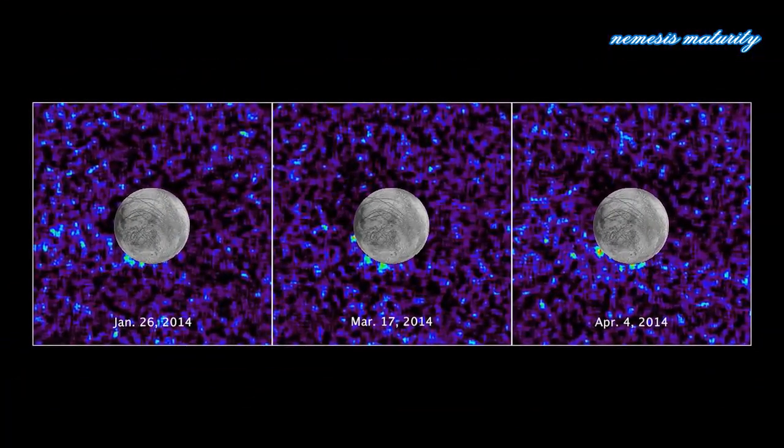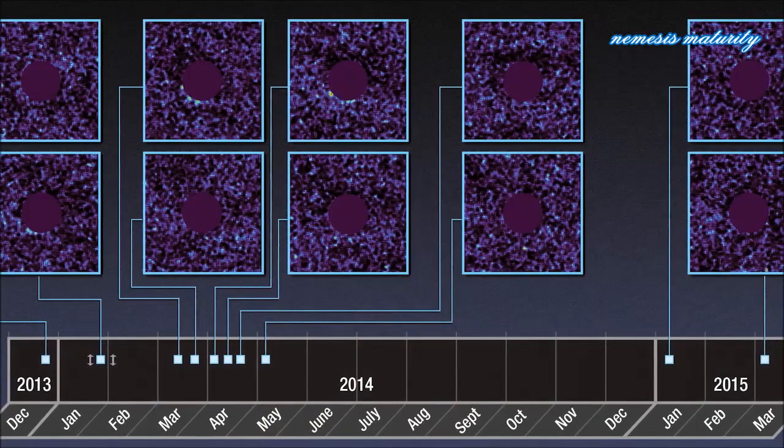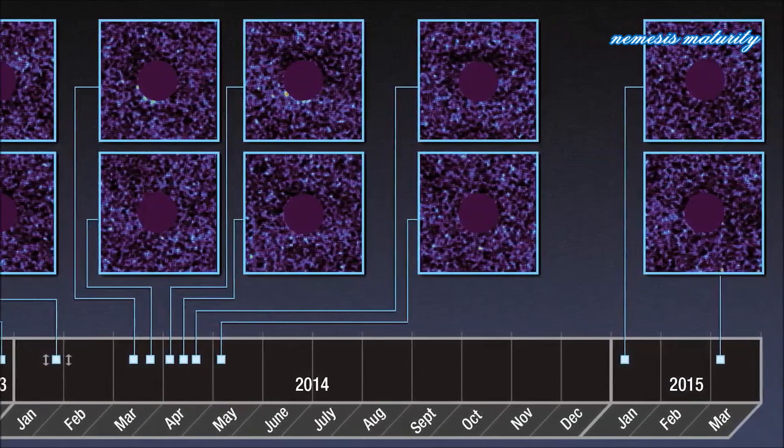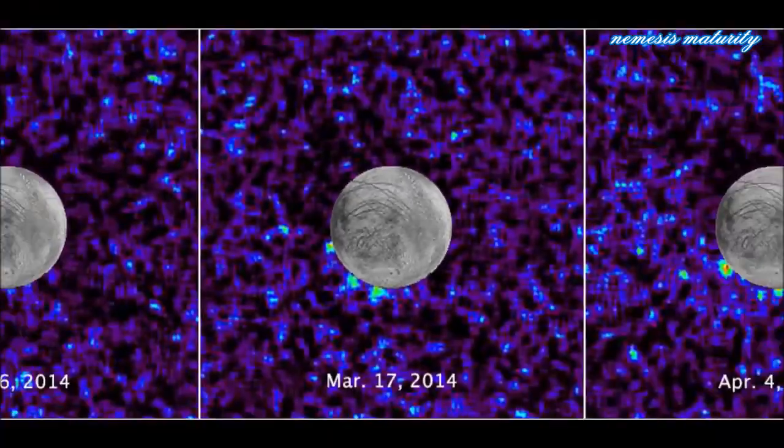Also, these plumes are transient, meaning they come and they go. Out of ten observations of Europa transiting across Jupiter, the team saw possible plumes on just three of the transits.